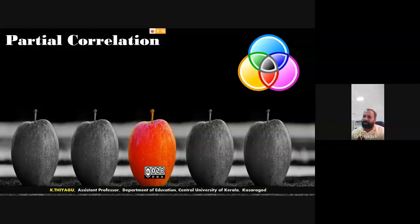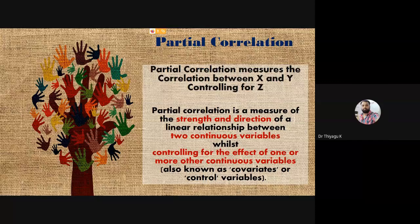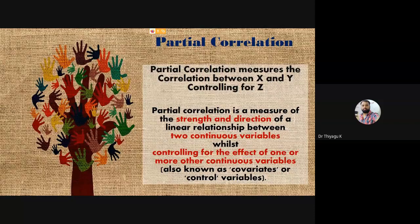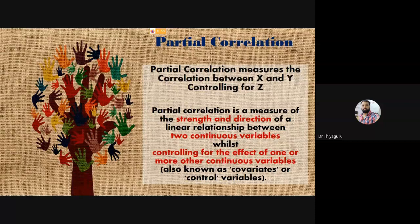Last time we discussed tri coefficients, phi coefficient of correlations, and biserial point biserial correlations. For those, we need only two variables. But when you go for partial correlation or multiple correlation, we need three variables. One variable is called X, which is the independent variable; Y is the dependent variable; and one more variable that may affect both the independent and dependent variable is called the confounding variable, Z.